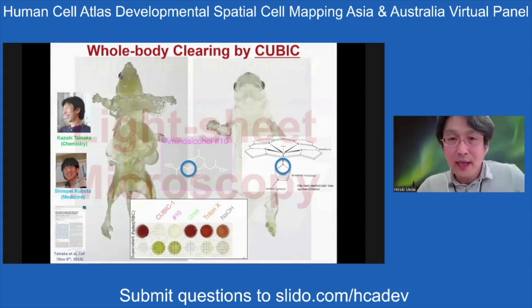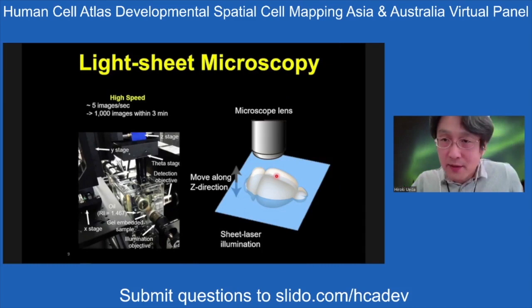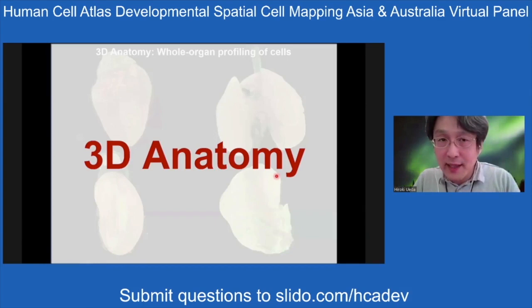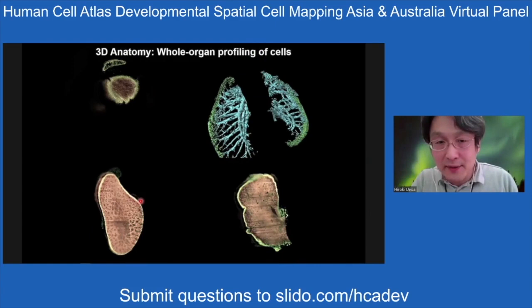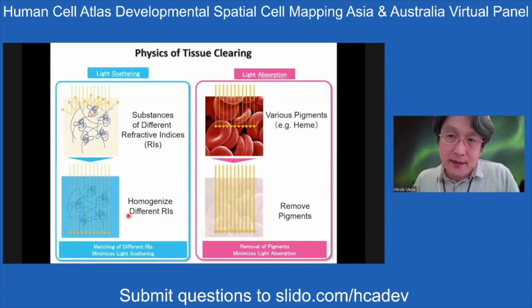Combined with light sheet microscopy, we can get three-dimensional structures rapidly and access data on organs such as heart, lung, liver, and kidneys.